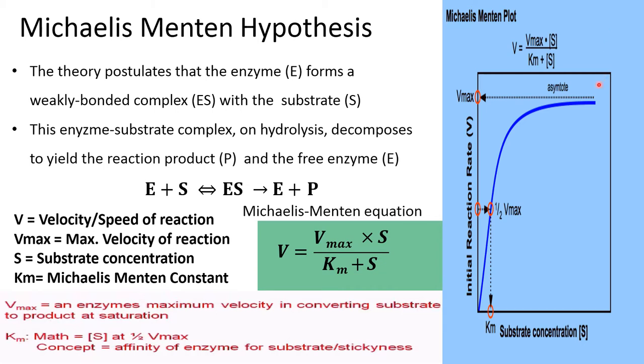If we take a substrate at half the Vmax, this is the velocity of the reaction at maximum. If we take half of it, that is half the Vmax and draw a line in the graph, it will intersect at the x-axis which represents KM. So KM is substrate concentration at half the Vmax.